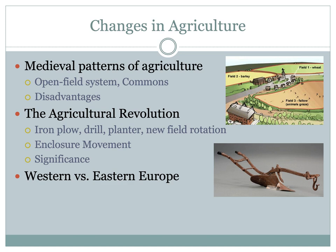Let's start by taking a look at some changes in agriculture. Up until the 18th century, most of Europe used medieval patterns of agriculture. About 80% of the people in Western Europe earned their entire livelihood through working in agriculture in the countryside. This could vary throughout Europe. For example, Eastern Europe saw higher levels of people, specifically serfs, working in agriculture.